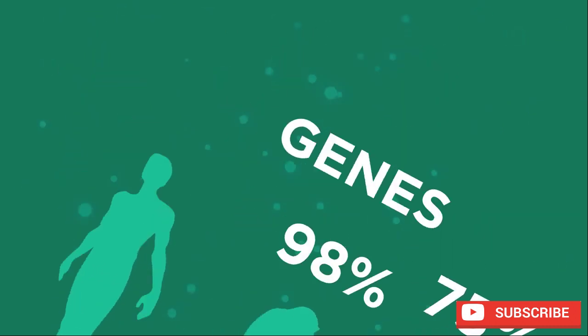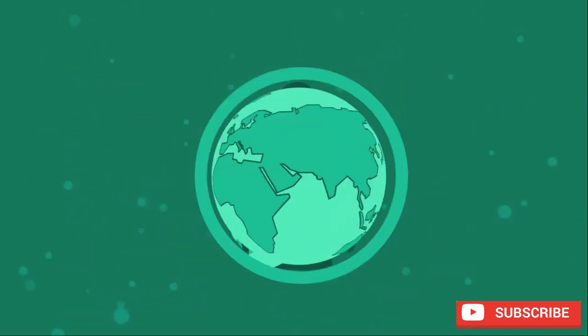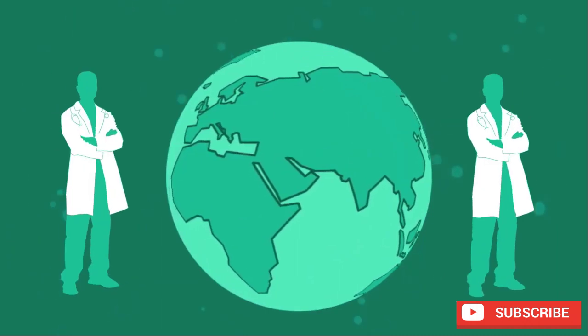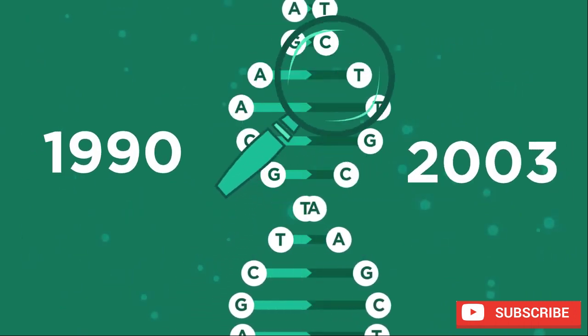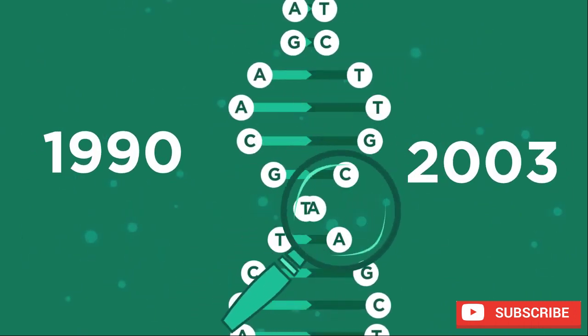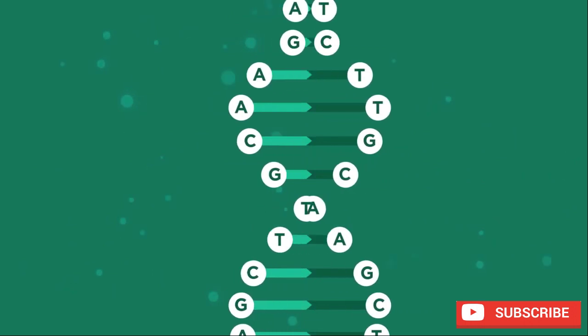The Human Genome Project was an enormous project that saw scientists around the world collaborate to work out the sequences of bases in the human genome. The project started in 1990 and was completed by 2003, two years ahead of schedule.